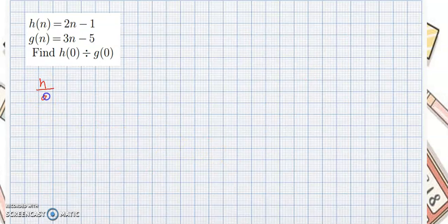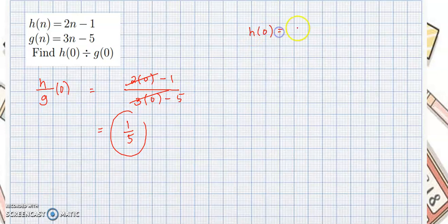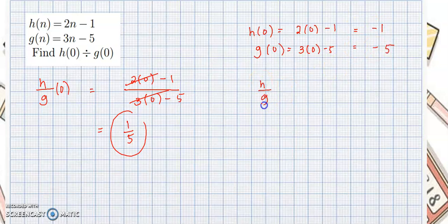Next example: h of 0 over g of 0. We can also solve this without chunking separately. So this would be 2 times 0 minus 1 over 3 times 0 minus 5. We cancel the 0 terms, and negative over negative is positive, so this would be positive 1 over 5. If you want to chunk this out: h of 0 equals 2 times 0 minus 1, which is simply negative 1. g of 0 equals 3 times 0 minus 5, which is simply negative 5. So h over g of 0 is negative 1 over negative 5, which is positive 1 fifth.